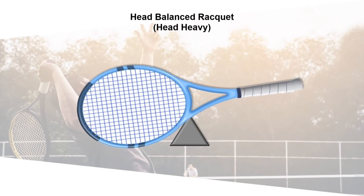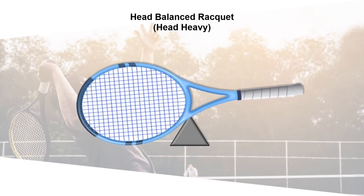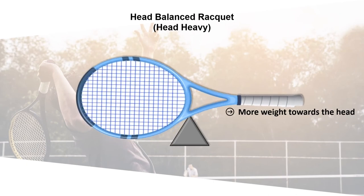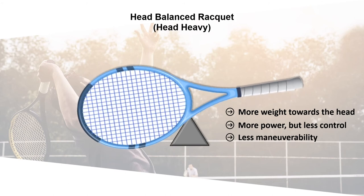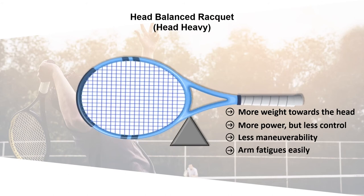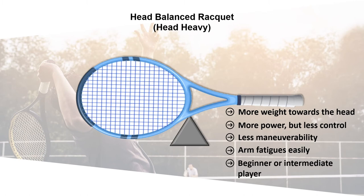A head-balanced racket will have more weight on its head. This type of racket provides more power but less control, and as a result it is less maneuverable. In addition, a highly head-balanced racket more easily tires the player's arm and can cause elbow injuries. It will allow, however, a beginner or intermediate player to gain power.